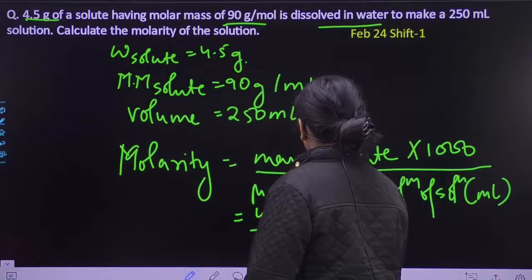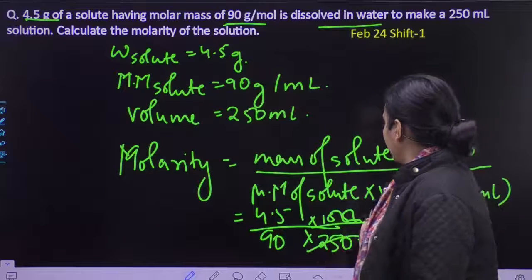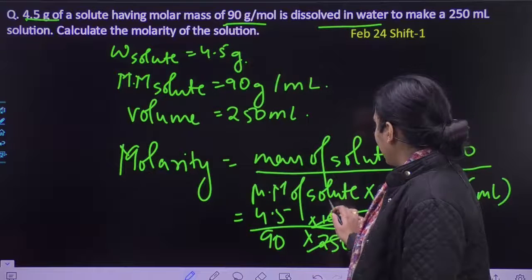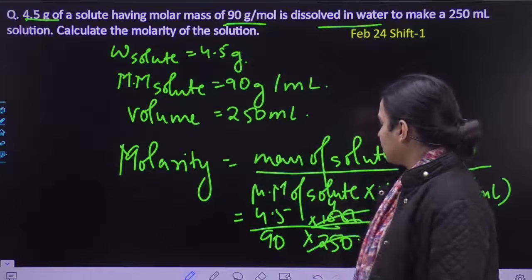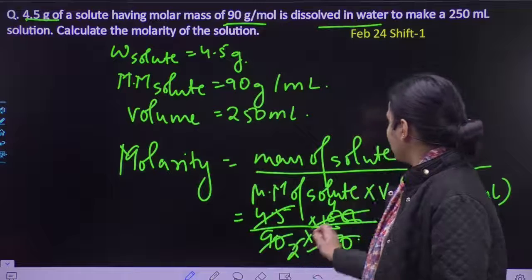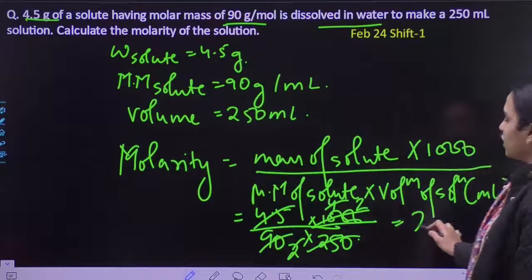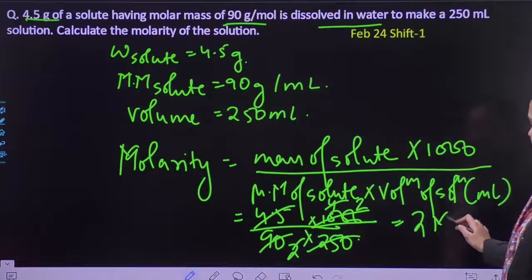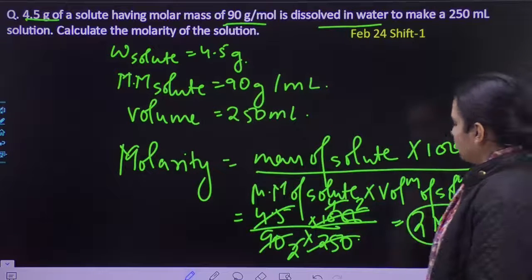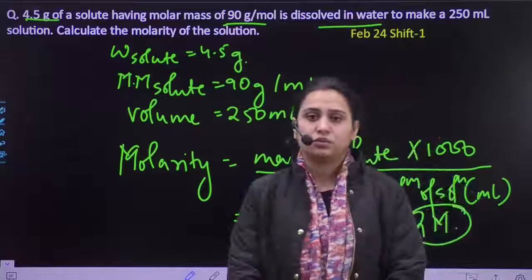Putting in the values: 4.5 divided by 90 into 1000 divided by 250. Yeh aur yeh cancel out ho gahe, yeh yeh cancel out ho gahe. So the answer is 2 molar — molarity is 2.